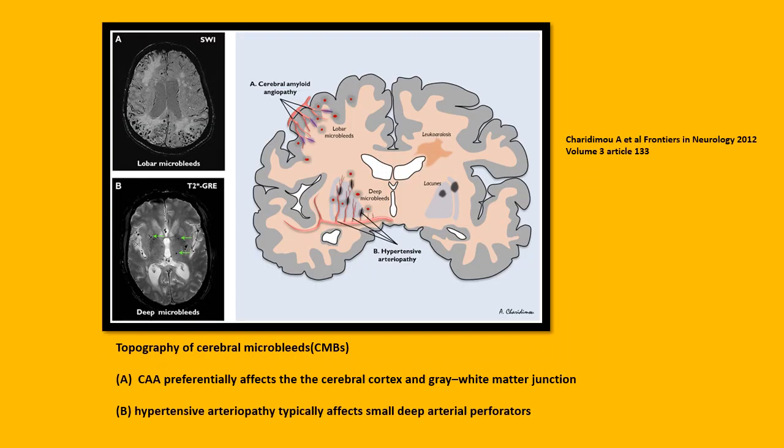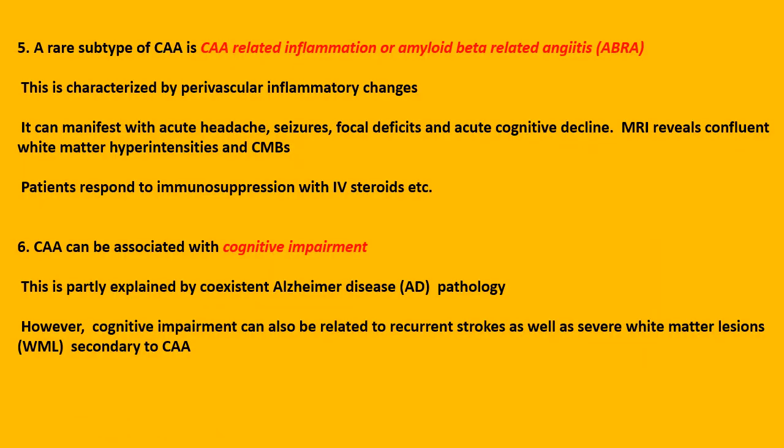This figure illustrates the topography of cerebral microbleeds in CAA and hypertension. CAA preferentially affects the cerebral cortex and the gray-white matter junction, while hypertensive arteriopathy typically affects the small deep arterial perforators.